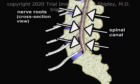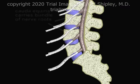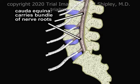A cross-sectional view reveals the spinal canal, which at this level no longer contains the spinal cord, but rather the bundles of nerve roots coming from the tail of the spinal cord, also known as the cauda equina — Latin for horse's tail.